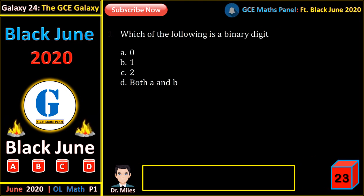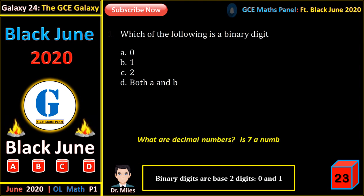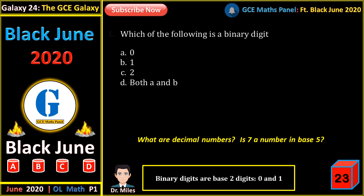Which of the following is a binary digit? Binary digits are base 2 digits, and we have just 0 and 1. Base 10 digits are called decimal digits, and we have from 0 to 9.